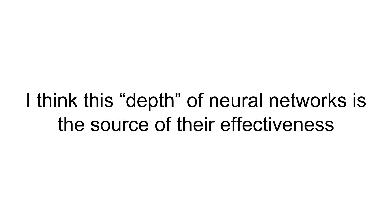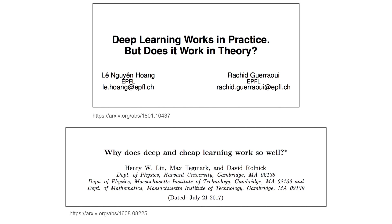I think this depth of neural networks is the source of their effectiveness — this is the reason why a 50-layer network works better than a 3-layer network, and a 150-layer network works better than a 50-layer network. If we were to go by the fact that neural networks can approximate any universal function, then even a 3-layer network can approximate any function out there. But why is it then that the more layers you stack, the better their performance gets? This is what's explored in these two papers — the first is "Deep Learning Works in Practice, but Does it Work in Theory?" and the second is "Why Does Deep and Cheap Learning Work So Well?"